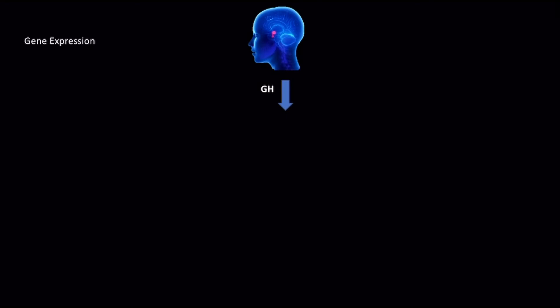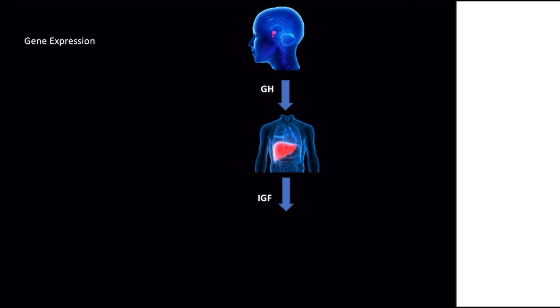GH induces the transcription of genes for insulin-like growth factors, IGFs, inside the liver. Following the rules of central dogma, transcription of IGF genes will lead to mRNA for IGFs, which will then be translated into actual IGFs. IGFs are proteins with high structural similarity to insulin, which are part of a complex system that cells use to communicate with each other. There are two IGFs to focus on for the HPS axis and growth, conveniently named IGF-1 and IGF-2.